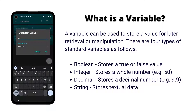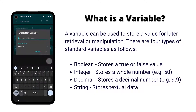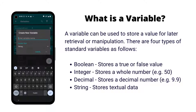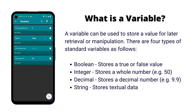Decimal variables store a decimal number and are useful in calculations where the decimal part is important. String variables are used to store textual information — for example, you could save the text of an incoming SMS message into a string variable for later use.